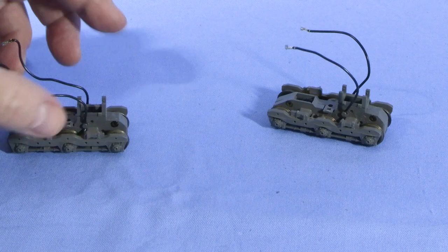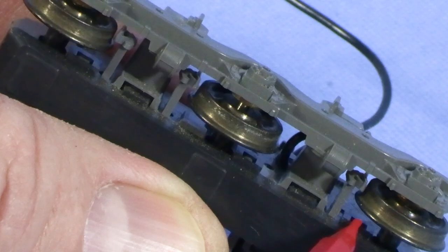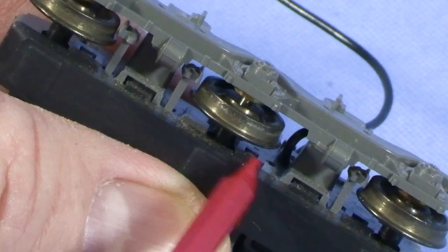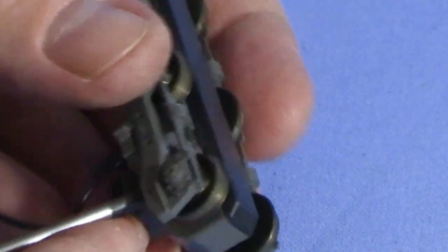One of the trucks barely rolls, and the other is only a little better. They're hard to see, but Kato-style trucks typically have clips on the bottom gearbox cover. A small screwdriver can be used to undo these.